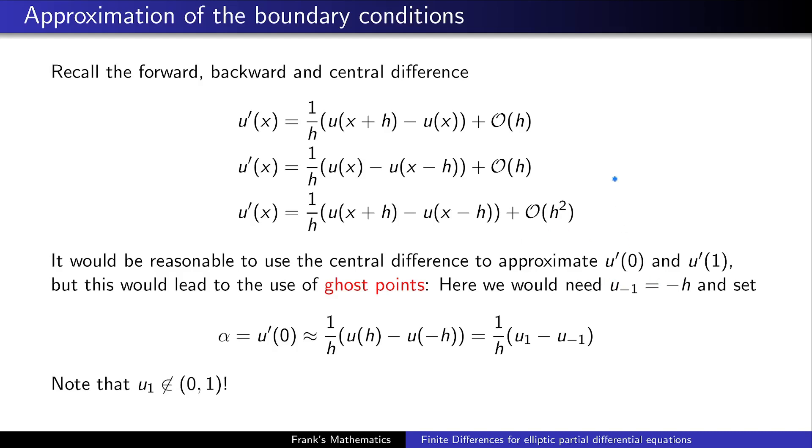However, this would lead to the use of ghost points, or at least I call them ghost points. So ghost points for me are points which are outside of our domain. So let's go quickly through it. We want to approximate u'(0). This would lead to the use of a point u₋₁, which is minus h. And then we have this approximation here. However, u₋₁ is outside of the domain. So we want to deal only with points inside of the domain. Hence, we only use the forward difference to approximate our Neumann boundary conditions. However, keep in mind, it is still possible to use the central difference, then you have to deal with more complexity of your system.